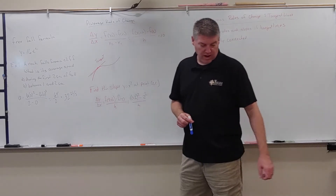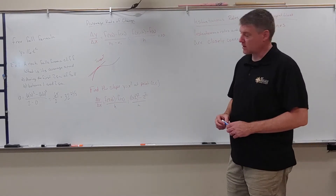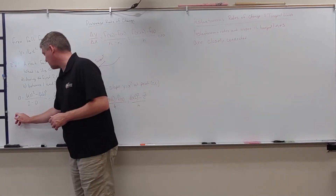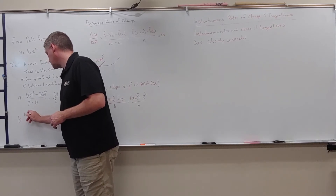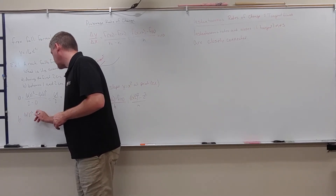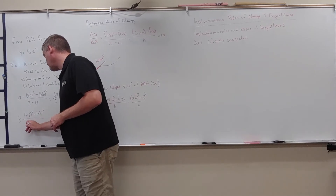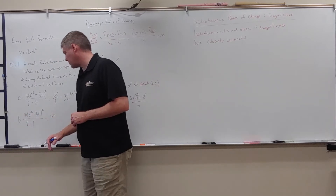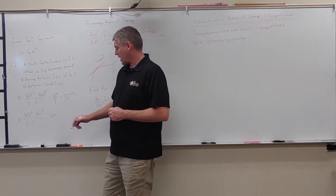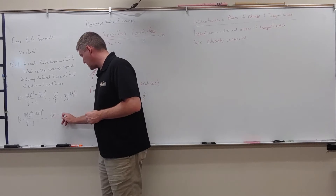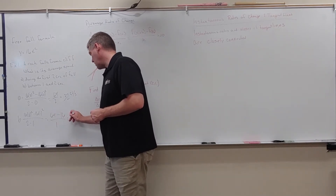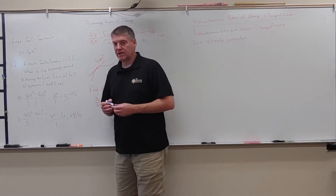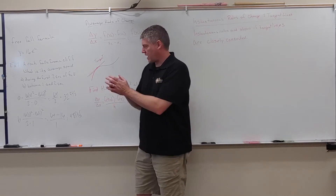On part B, we're going to look at what happens between second one and second two. We're going to do the same thing: 16 times 2 squared minus 16 times 1 squared, over 2 minus 1. This gives me 64 minus 16 over 1. So now we have an average speed of 48 feet per second.